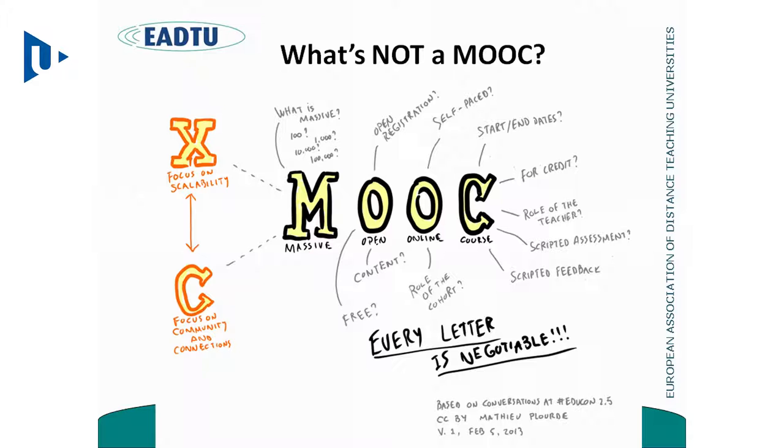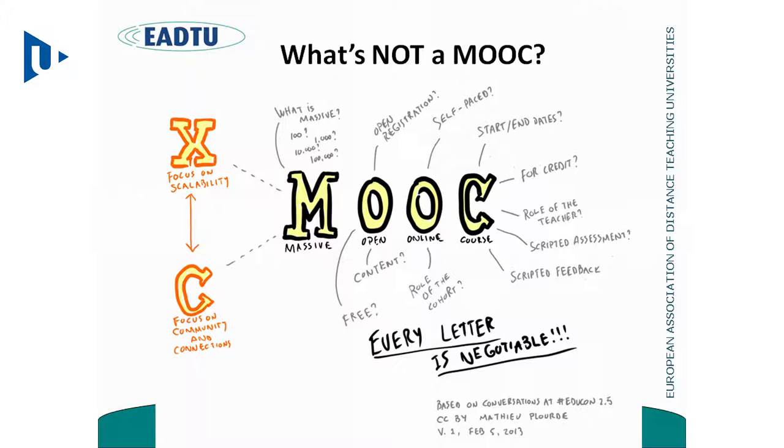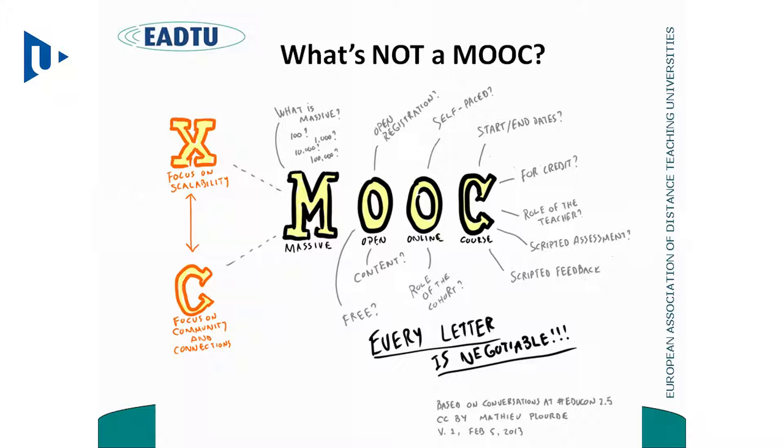First, what's a MOOC or what's not a MOOC? It's about the definition. MOOC stands for Massive Open Online Course. There's a lot of discussion about when a course is massive. You know that MOOCs have 200,000 or even 400,000 participants. So is it only a MOOC when there are more than 1,000 or more than 2,000? When exactly is it massive?